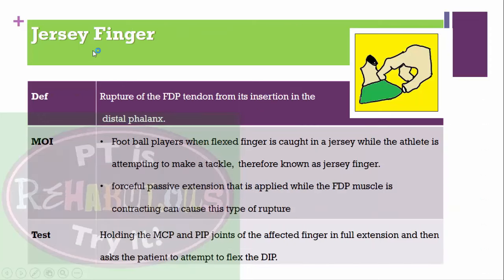Jersey finger: rupture of the flexor digitorum profundus tendon from its insertion in the distal phalanx. Occurs in football players when their finger catches in a jersey while attempting to tackle, causing forceful passive extension while the flexor digitorum profundus is contracting. Special test: hold the metacarpophalangeal joint and proximal interphalangeal joint in full extension, then ask the patient to actively flex the distal interphalangeal joint — inability to do so is a positive test.